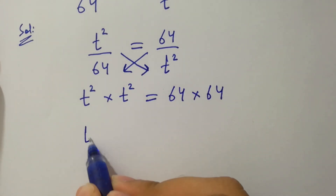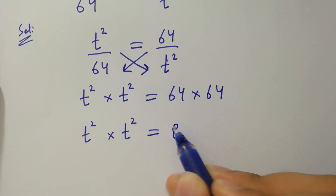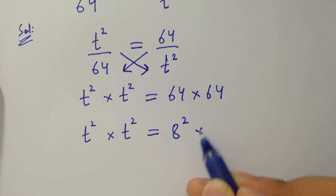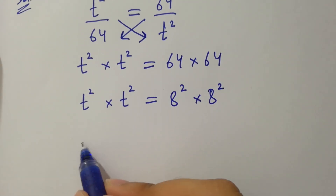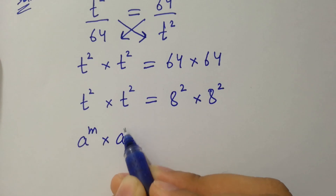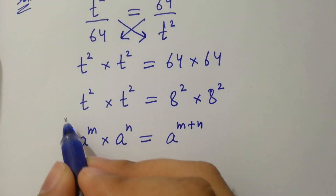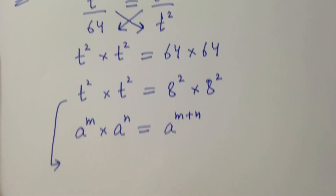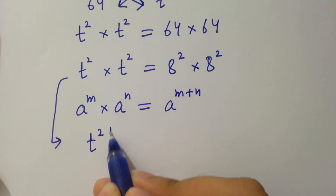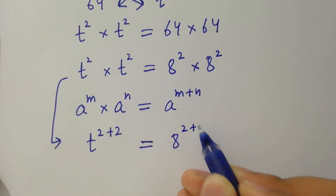t squared times t squared equals 8 squared times 8 squared, which is 64 times 64. Since a to the power m times a to the power n equals a to the power m plus n, it will be t to the power 2 plus 2 equal to 8 to the power 2 plus 2.